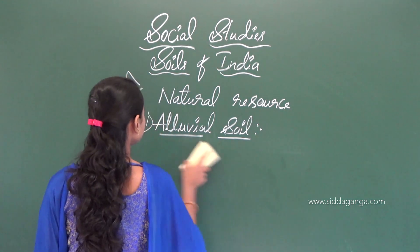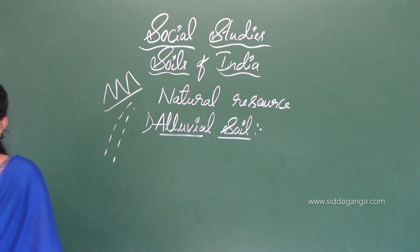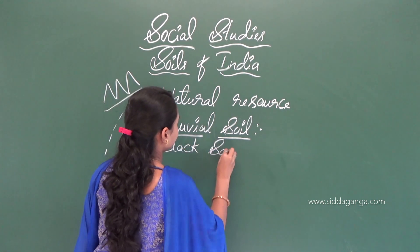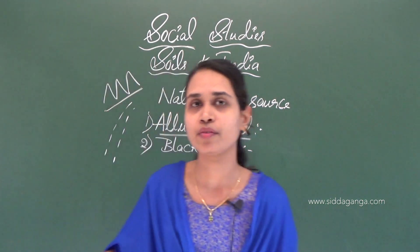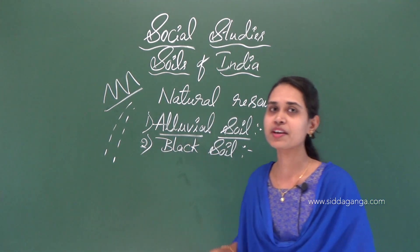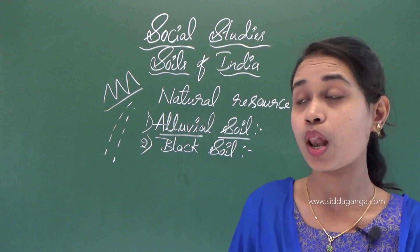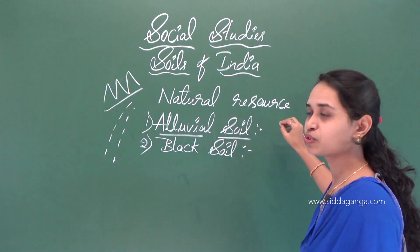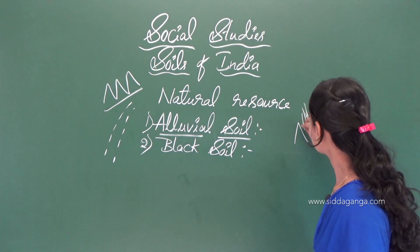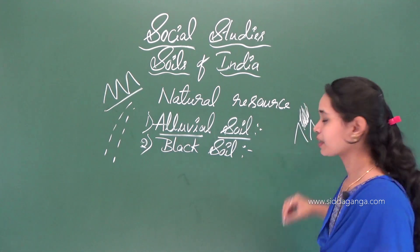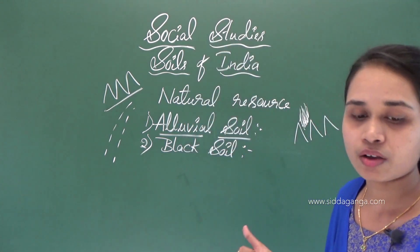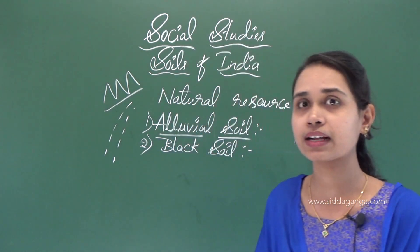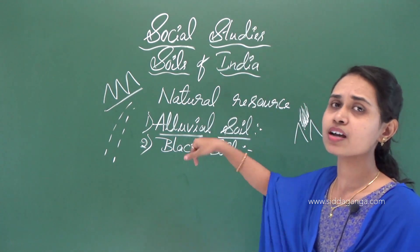The next type is black soil. It is black in color and has been formed from lava rocks — from volcanoes, which we call Jolamukhi. Because it is formed from lava rocks, it is also called black lava soil.